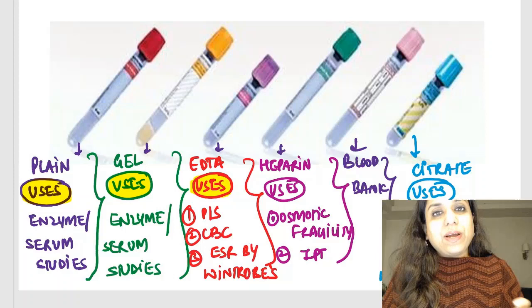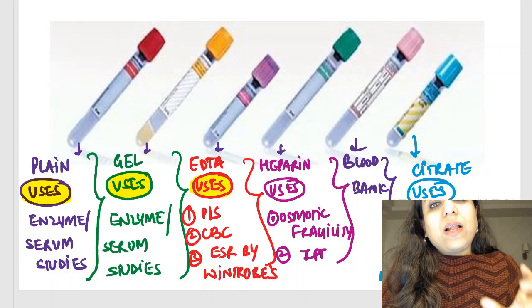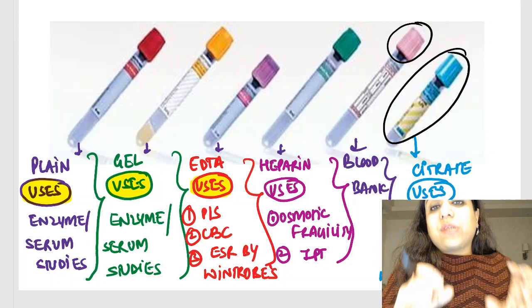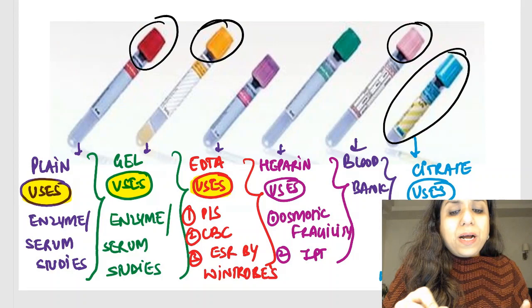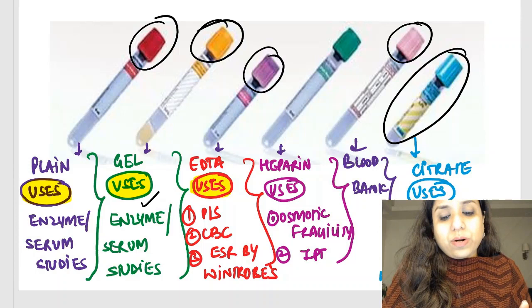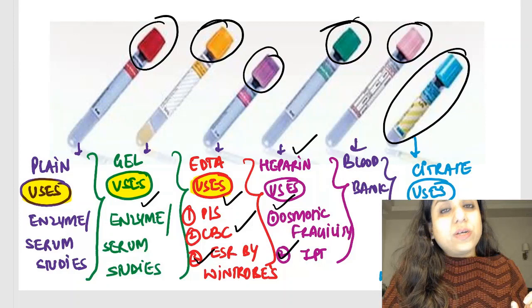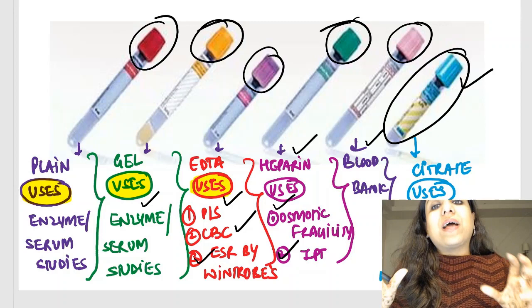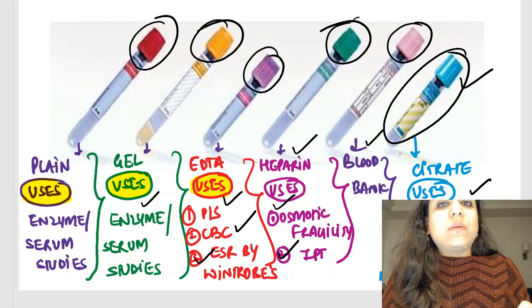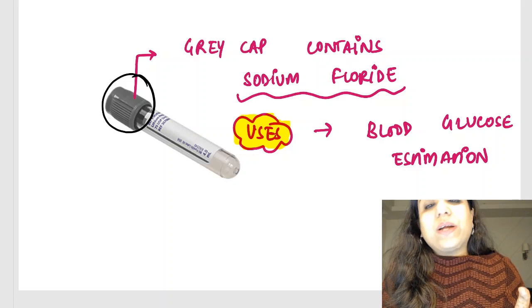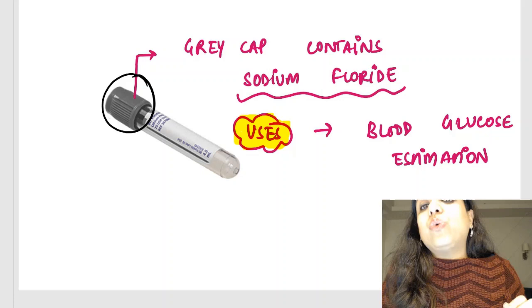Another very popular topic is the vacutainer. When a person comes to take blood from a lab, he carries these tubes with colored caps. The color coding indicates the kind of anticoagulant or substance present. Red tube is plain. Yellow tube has a gel used for enzyme and serum studies. Lavender tube has EDTA — used for peripheral smear, CBC, or ESR by Wintrobe's method. Green tube contains heparin — used for osmotic fragility and immunophenotyping. Pink tube is used for blood banking. Blue tube carries citrate — used for coagulation studies and ESR determination by Westergren's method. The gray cap tube contains sodium fluoride, used for blood glucose estimation because sodium fluoride inhibits the enzyme enolase.